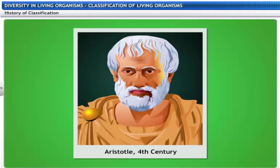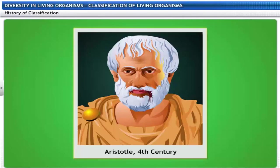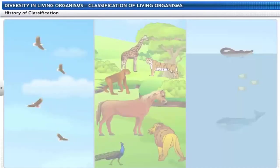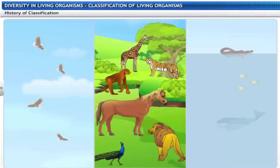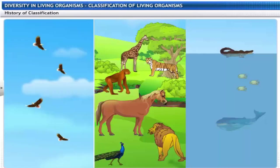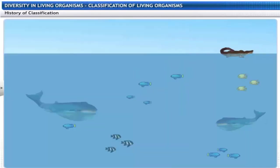In the fourth century, Aristotle, the Greek philosopher, classified animals based on whether they live on land, in water or in the air. But his classification was unscientific as it placed unrelated organisms like fishes, crocodiles and whales, living in the same habitat, in the same group.